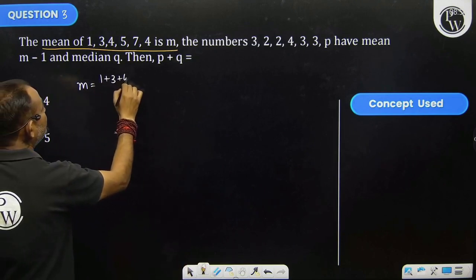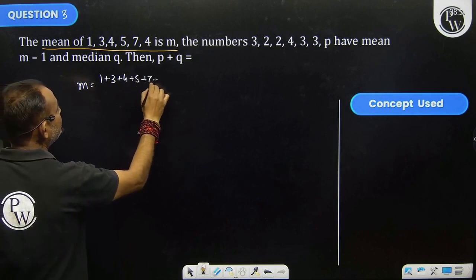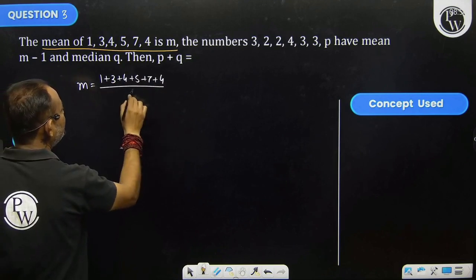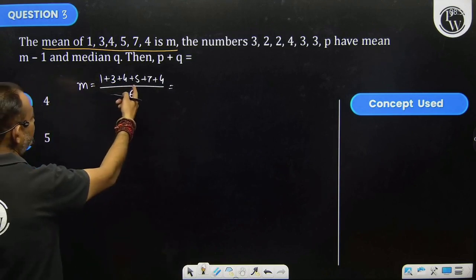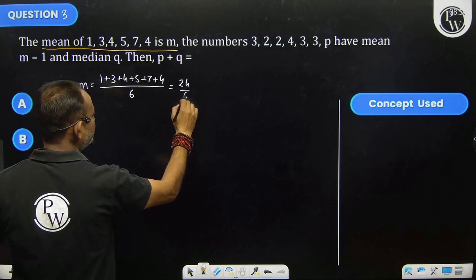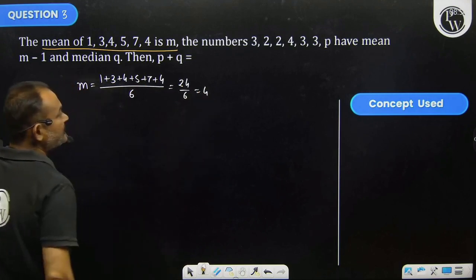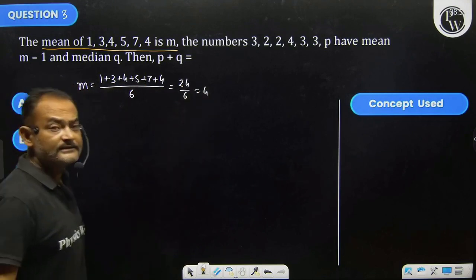1, 3, 4, 5, 7, 4 divided by 6. Now add these numbers: 4, 8, 13. 24 by 6, that means m equals 4. Now what is given?